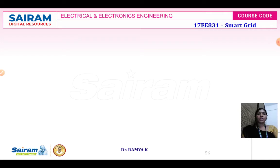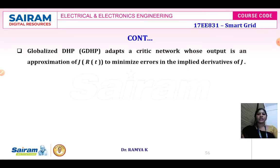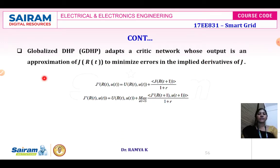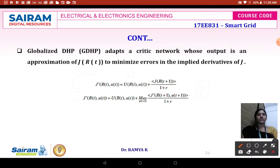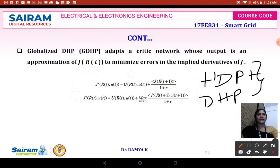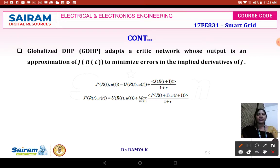The globalized DHP (GDHP) also adapts the critic network whose output is the approximation of j with respect to r(t), in order to minimize the error in the implied derivatives. The globalized DHP combines the best of HDP and DHP to produce better results.